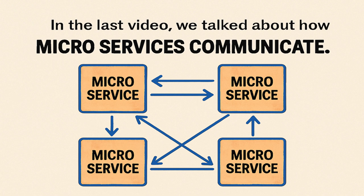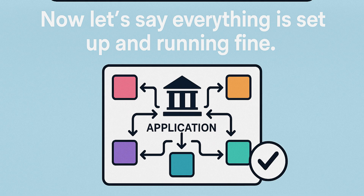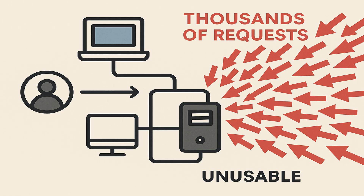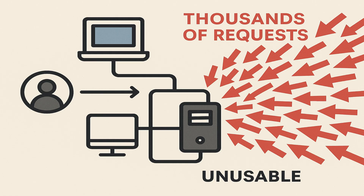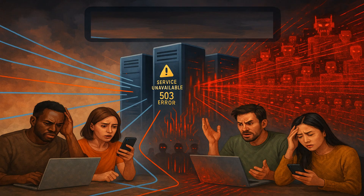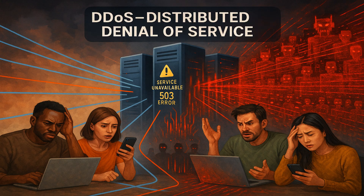In the last video we talked about how microservices communicate. Now let's say everything is set up and running fine — you have designed your application with the best architecture and the communication is seamless. Now imagine one user, or maybe one misbehaving service, starts sending thousands of requests per second. It can be intentional like an attacker, or it can be bad code like a retry loop gone wrong. All these requests will start eating your server resources and eventually your system becomes unstable. This is known as DDoS, or distributed denial of service attack.